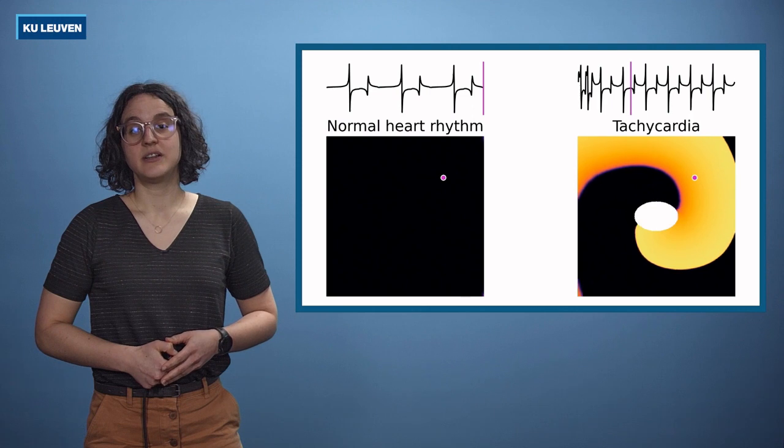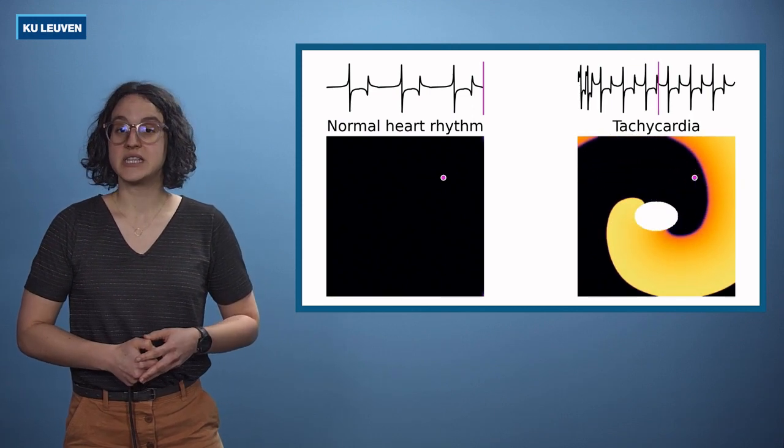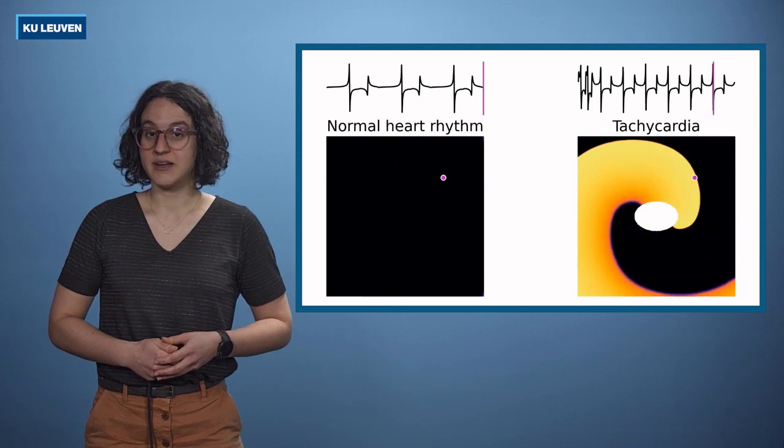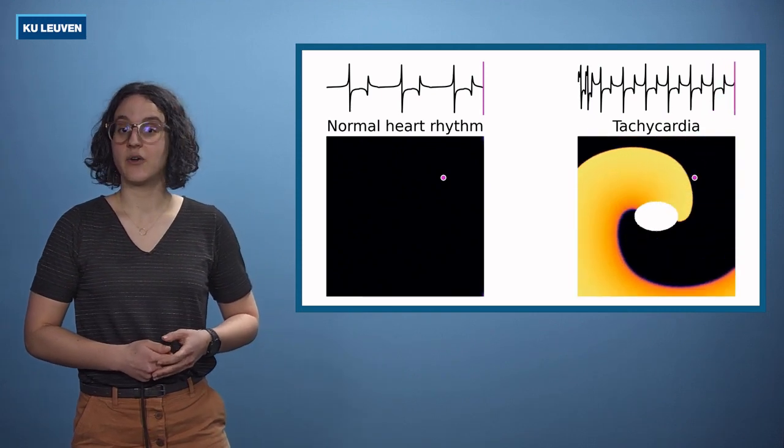Tachycardia, for example, is an arrhythmia where the heartbeat is too fast. One mechanism behind the fast heartbeat is a rotating wave, here around a scar.